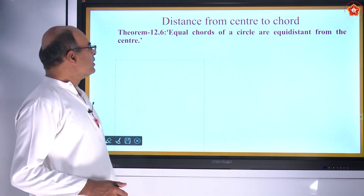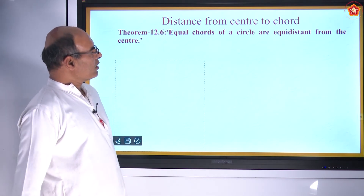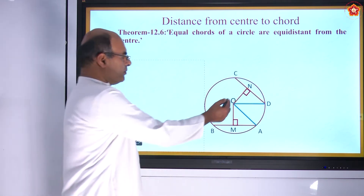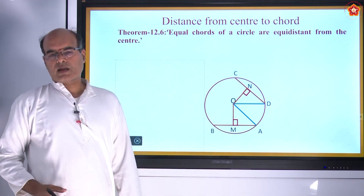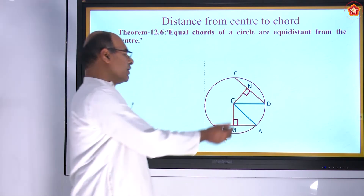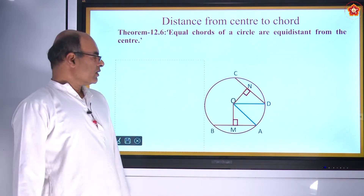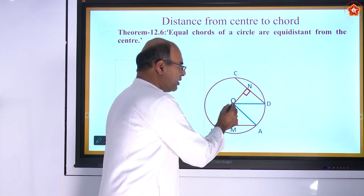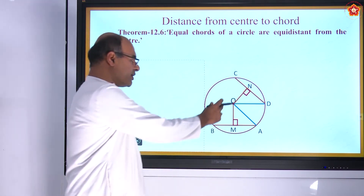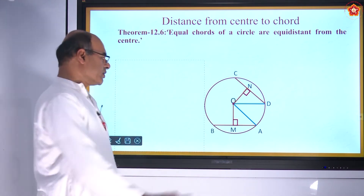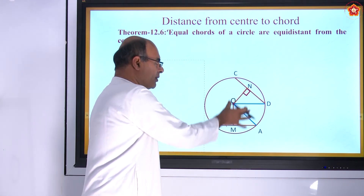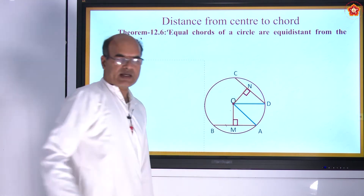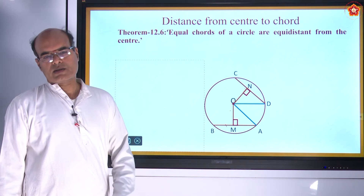Another theorem: Equal chords of a circle are equidistant from the center. Here CD and AB are equal chords. The distance from the center means the perpendicular from the center to the chord — OM and ON are the distances. We must prove OM equals ON when AB equals CD. If the chords are equal, then the distances from the center to the chords are also equal.